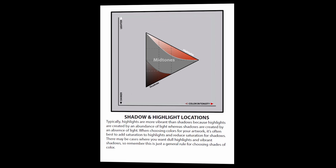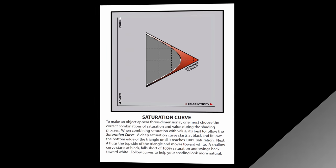The following page will show you where to find shadows and highlights. Typically, highlights are more vibrant than shadows because highlights are created by an abundance of light, whereas shadows are created by an absence of light. When choosing colors for your artwork, it's often best to add saturation to highlights and reduce saturation for shadows. There may be cases where you want dull highlights and vibrant shadows, so remember, this is just a general rule for choosing shades of color.